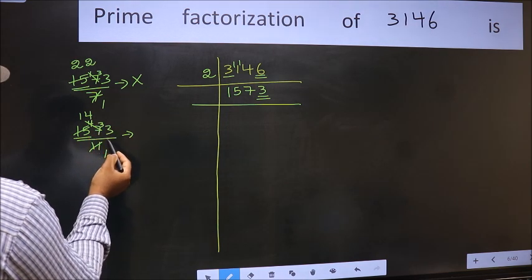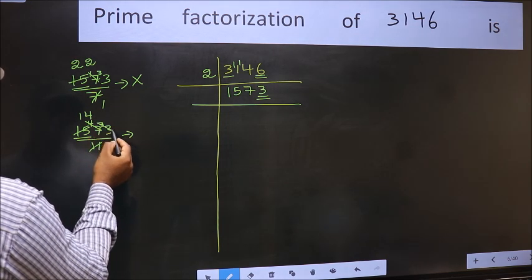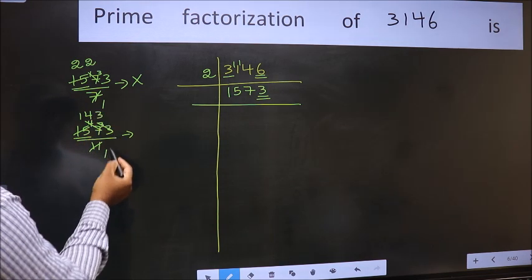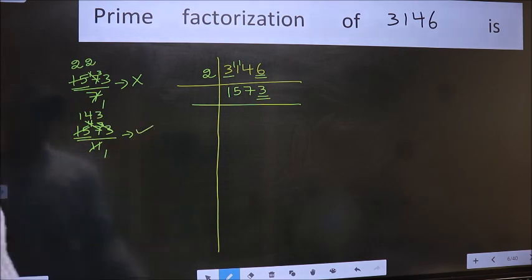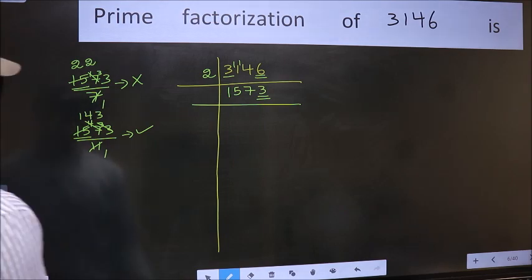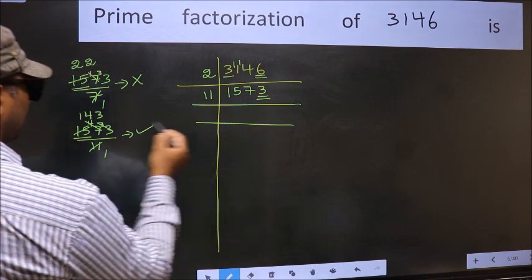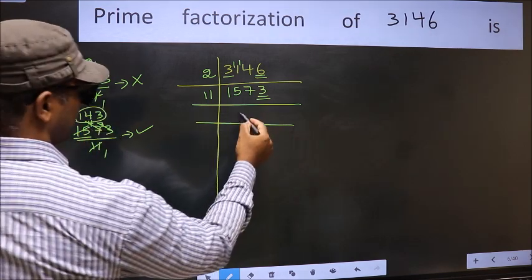3 carried forward 33. When do we get 33 in 11 table? 11, 3 is 33. No number has been left out. So this is divisible by 11. So 11 here. And here we should write this number 143.